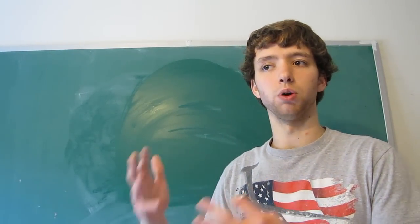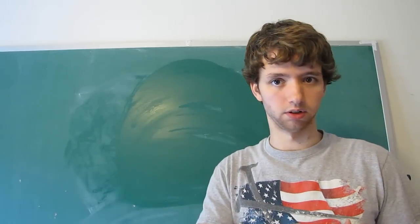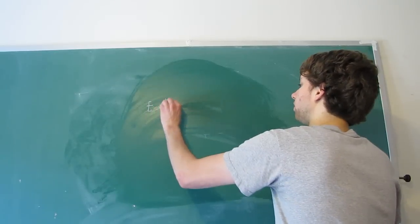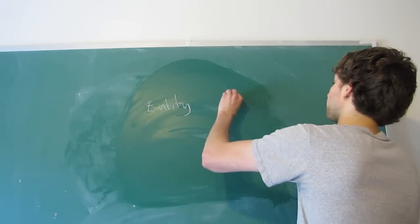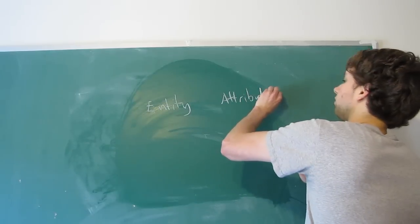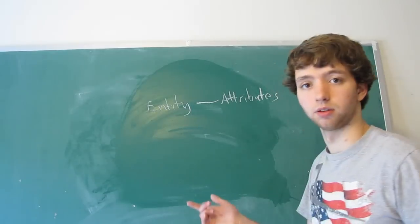So we have to worry about entities. There's two terms that we talked about earlier: entities and attributes. Entities are anything we store data about. Attributes are the things we store about the data. When it comes to entities... Attributes are what we store about the entities. So basically we have entities, and then we have the attributes for that entity.